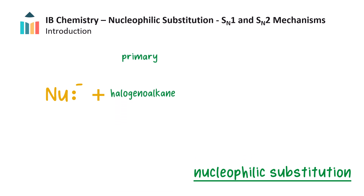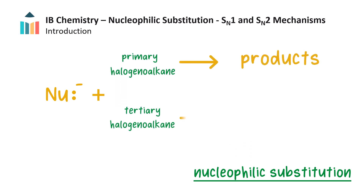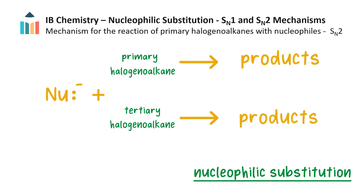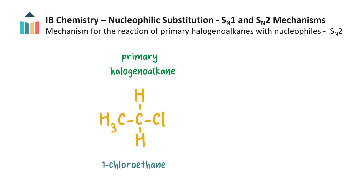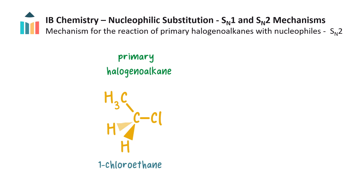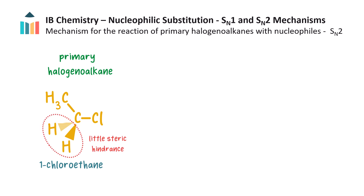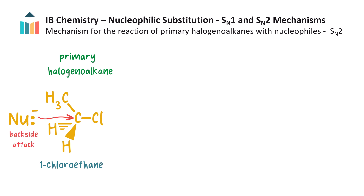Specifically, let's look at how primary and tertiary halogeno alkanes react with nucleophiles. In a primary halogeno alkane, the carbon atom of the carbon-halogen bond also has at least two hydrogen atoms attached to it, and a maximum of one R group, which could be a hydrogen atom, an alkyl group, or an aryl group. For example, if the R group is a methyl group and the halogen is chlorine, the molecule is 1-chloroethane. Drawing this structure using dash-wedge notation, we notice a tetrahedral arrangement of the four groups around the electrophilic carbon. Since there is little steric hindrance here due to the two small hydrogen atoms, the nucleophile can attack from this side of the molecule on the opposite side to the leaving group. This is called backside attack.